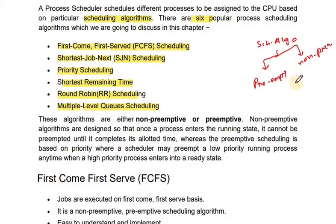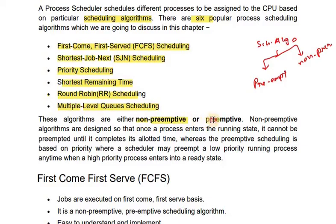Preemptive means that our process is completed when the CPU is done. Non-preemptive means that our process is completed when the CPU is done. The different algorithms are either non-preemptive or preemptive, and here is the explanation for both.